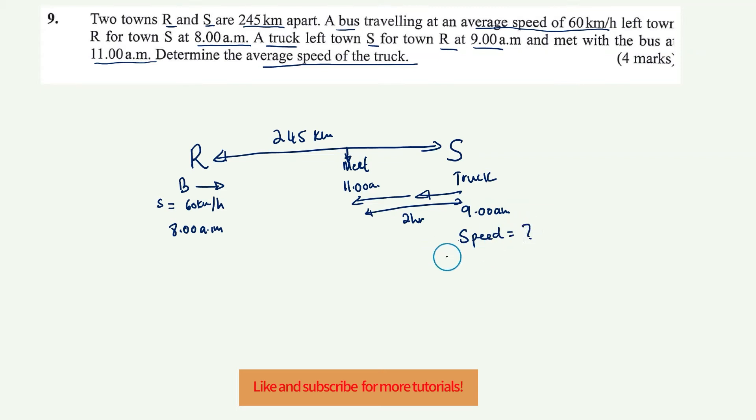So in order to find speed, what do we need? What's the formula that connects time and speed? Well, speed is equal to distance over time. Okay, so the problem is, I don't have distance here. If I had distance, I've got time, I can find speed.